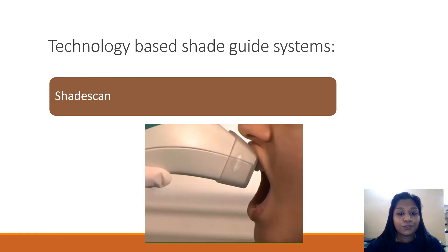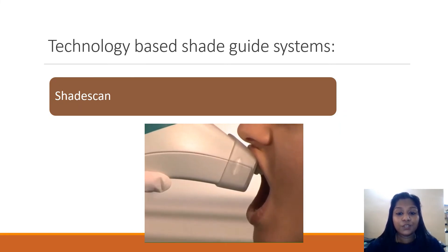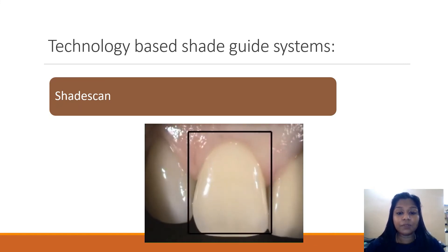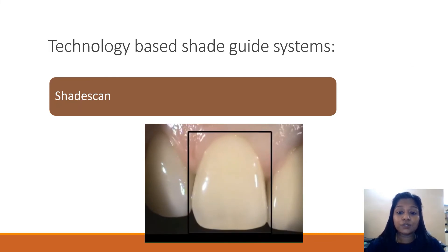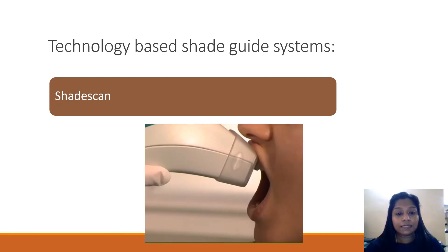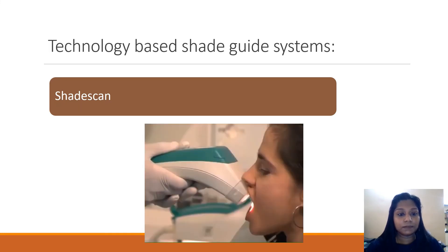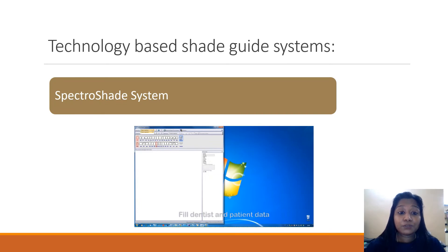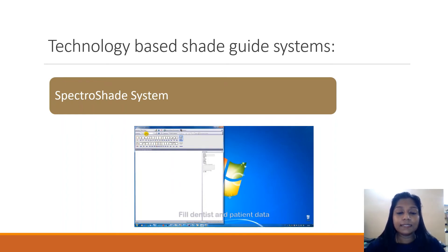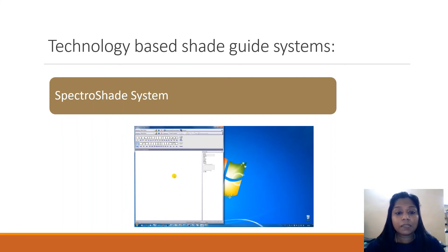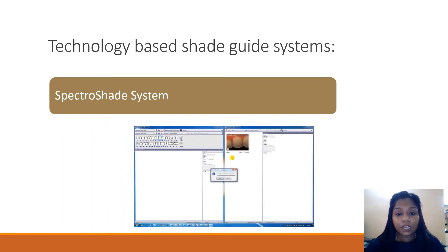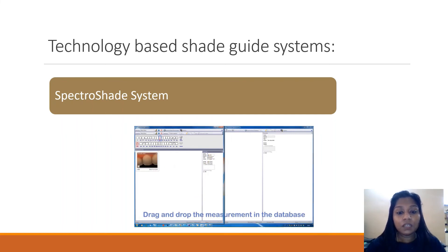The next system is Shade Scan — a handheld unit similar to an intraoral scanner that accurately determines the shade. It captures the image and transfers it to software where the shade of the patient can be determined. The Spectral Shade System is also similar: the dentist performs an image analysis and then transfers it to the laboratory technician via email. After the image is captured, the technician analyzes the shade and, using software, can view the hue, chroma, and value of the required restoration.